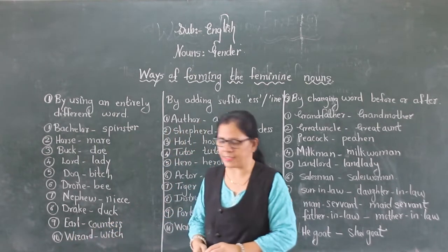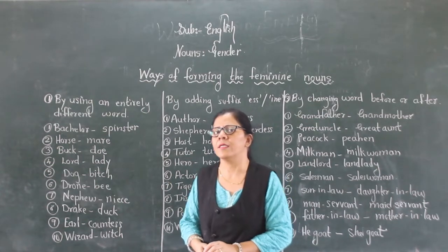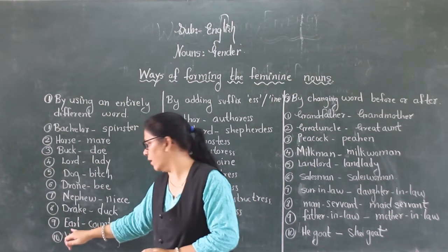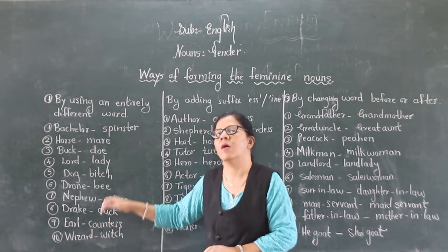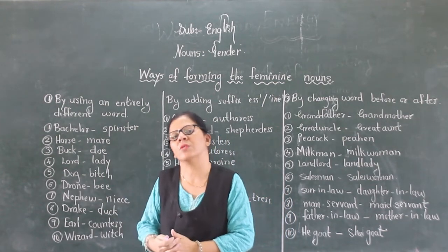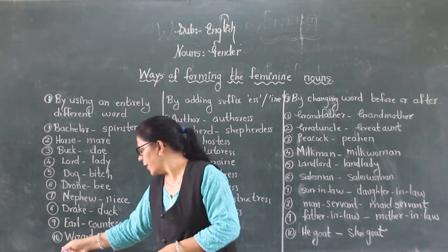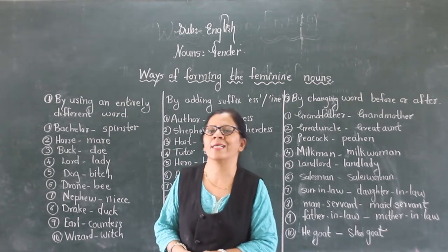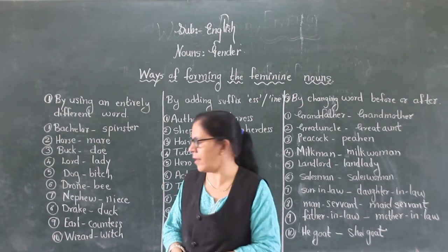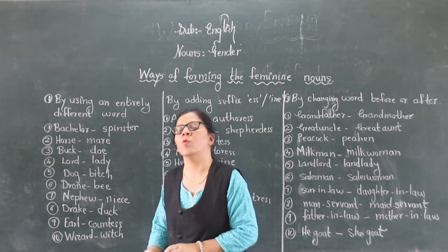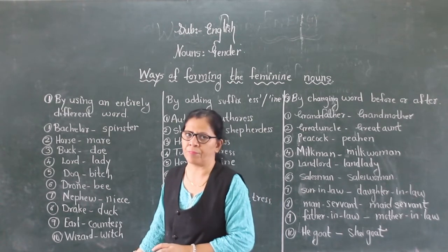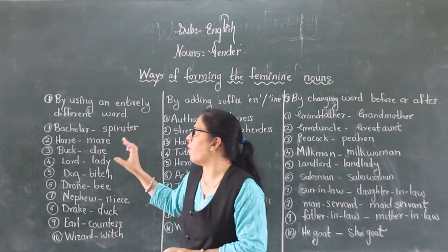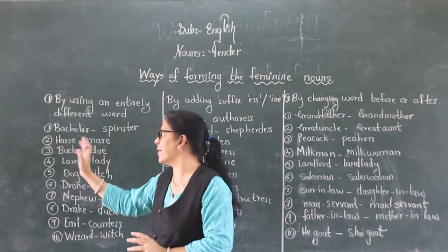Earl, countess. Earl is a British man who has a high social position, and a British female who has a high social position is called a countess. Wizard, witch — a male who has evil powers is called a wizard, and a female who has evil powers is called a witch. These are some examples of forming feminine gender by using an entirely different word — you can see these two words are entirely different.